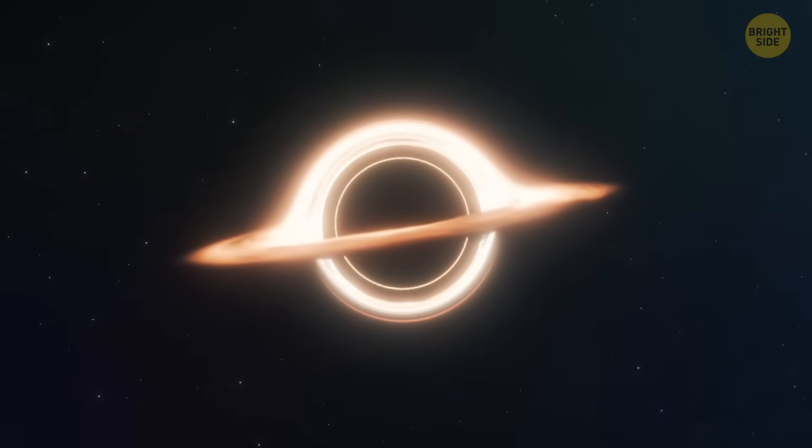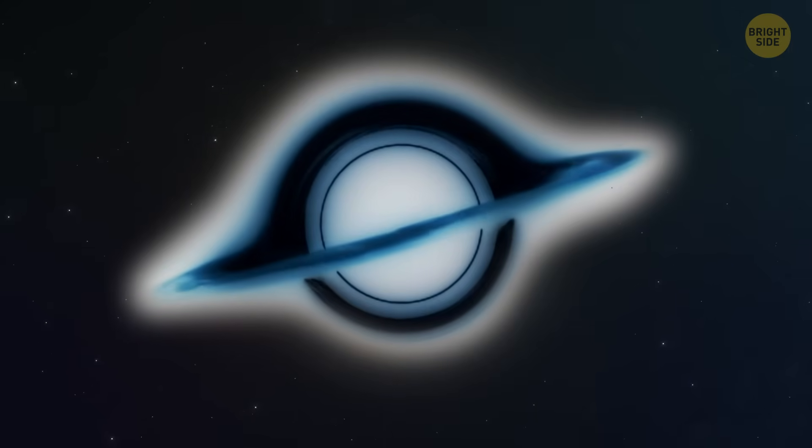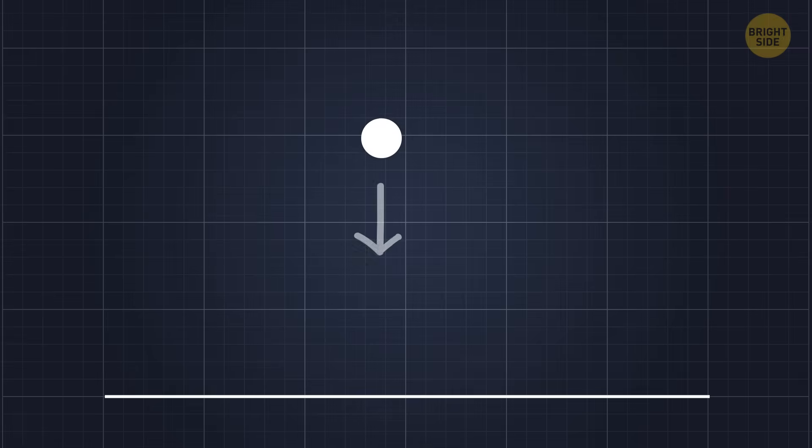Think of a white hole as a black hole running in reverse. Kind of like tossing a ball, when it falls, it goes down. But when it bounces back up, it follows the same path in reverse. That's basically what a white hole does with space and time.